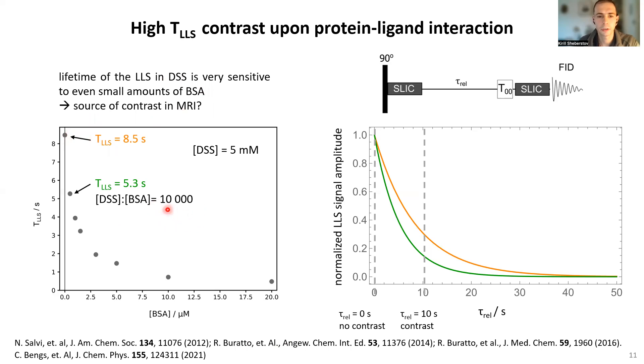For example, in this point, the ratio of concentration DSS to BSA was 10,000 molecules, and the lifetime of long-lived states dropped almost twice.